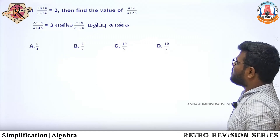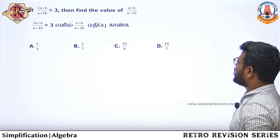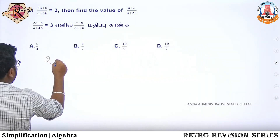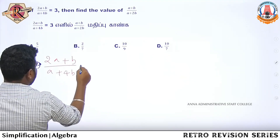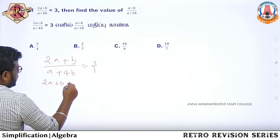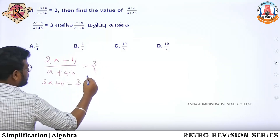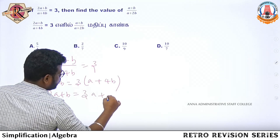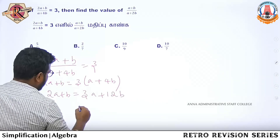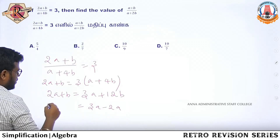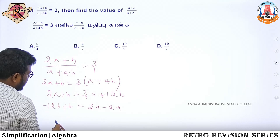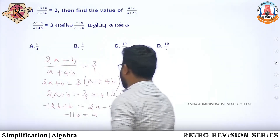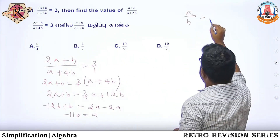Question 1: If (2a + b) divided by (a + 4b) equals 3, find the value of (a + b) divided by (a + 2b). So 2a + b = 3(a + 4b), which gives 2a + b = 3a + 12b. Rearranging: b - 12b = 3a - 2a, so minus 11b = a. Therefore a/b = -11/1.